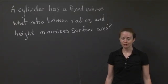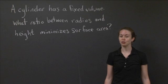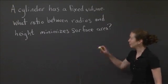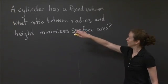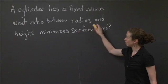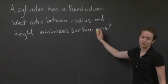Welcome back to recitation. This will be the last video where we do an optimization problem, and this one's a little bit different than the other two. So I'm going to give you the problem now. The problem is the following: A cylinder has a fixed volume. What ratio between radius and height minimizes surface area?